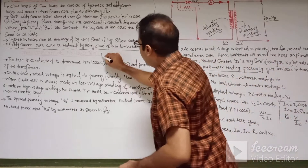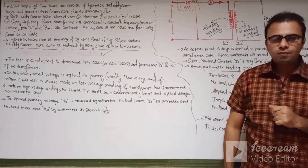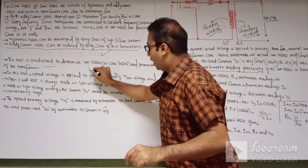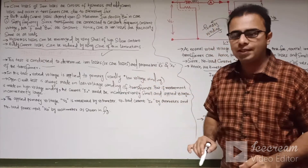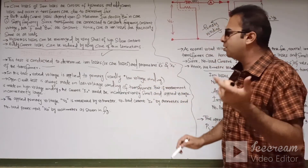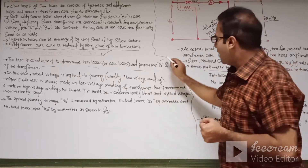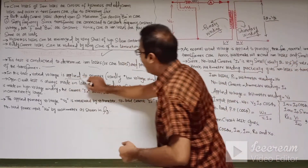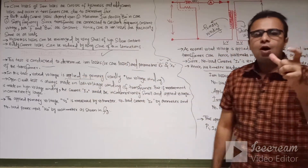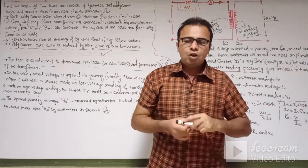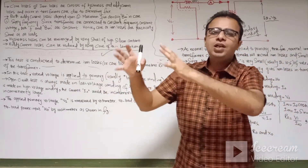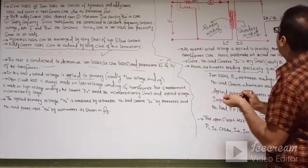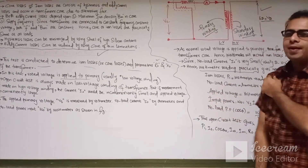Now let us discuss the open circuit test of the transformer. This test is conducted to determine the iron losses or core losses in the transformer, and from it we can also find out the parameters R0 and X0 of the transformer. In this test, rated voltage is applied to the low voltage winding of the transformer, and the high voltage winding is kept open circuited.